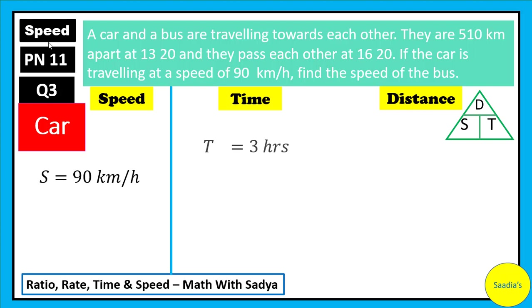Now that the speed and time is given, we can find the distance that the car has travelled. We know that distance is equal to speed multiplied by time. Speed is 90 km per hour and time is 3 hours. When we simplify it, we get 270 km. This means that the car has travelled a distance of 270 km.